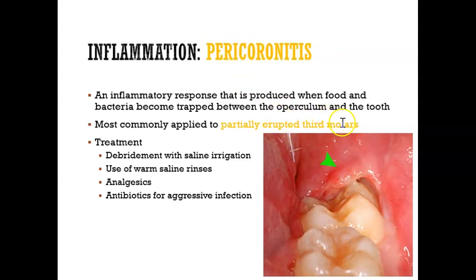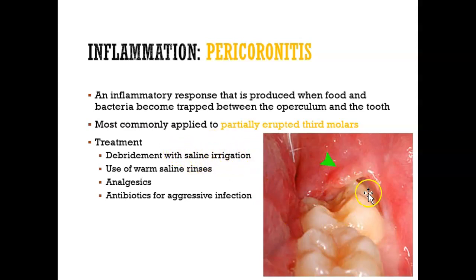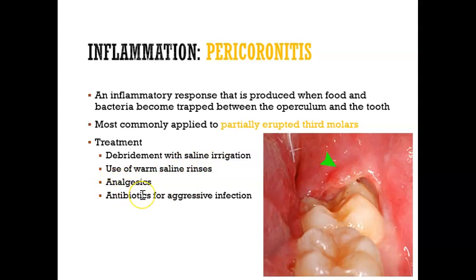Pericoronitis happens around a partially erupted third molar. Remember: itis means inflammation, peri means around, and corona comes from the crown — so it means inflammation around the crown of the third molar. To treat it, we do debridement with saline irrigation to clean that area, remove all the food and bacteria, and irrigate with monojet syringes. We also recommend warm salt water rinses, pain medication, and if it's really infected, antibiotics.